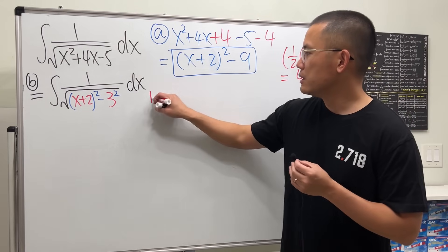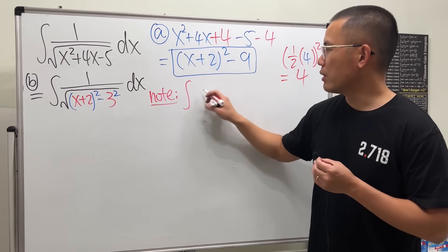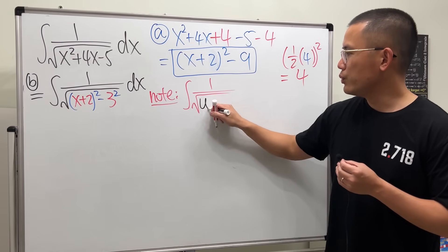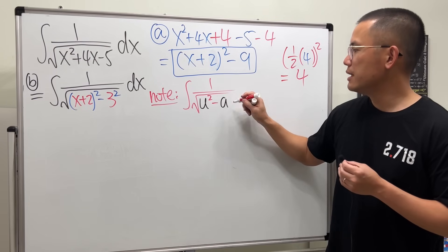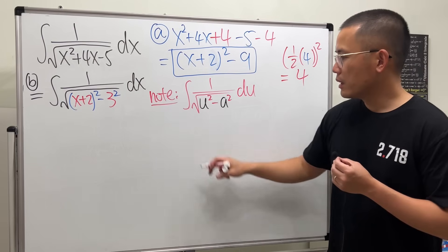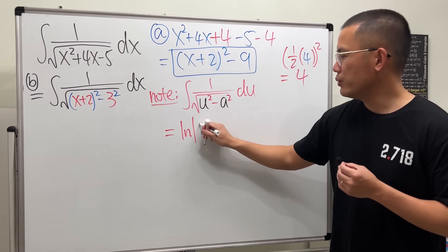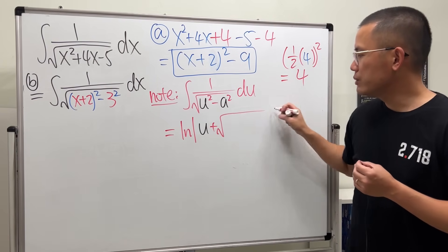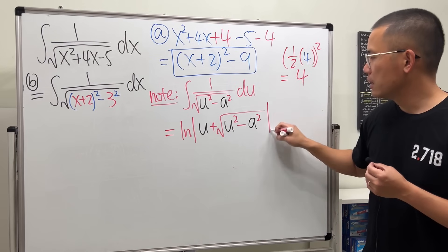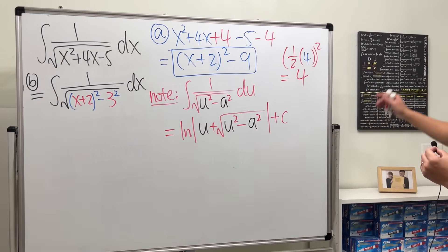Here is a note: if we have the integral of 1 over the square root of u² minus a², then integrating in the u world, we can use ln|u + √(u² − a²)| + C. This is the standard result I have on this board.